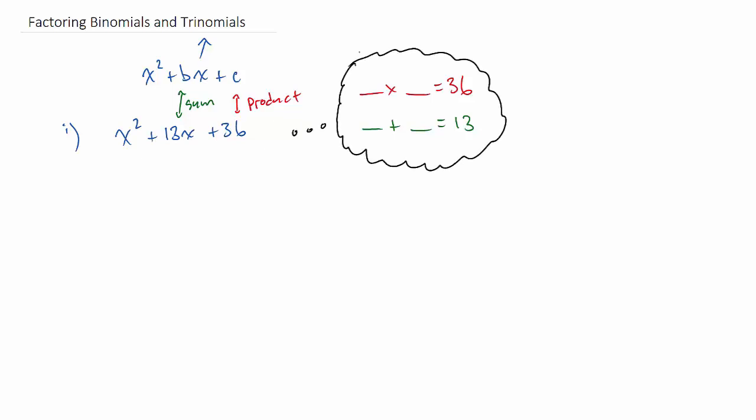So one approach to this is you just think of, or you actually list out, all the factors of 36. There's actually quite a few of them, so let's make a little list, and then we will look for the pair that adds up to 13.